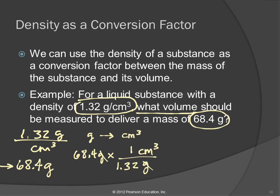You won't have to memorize densities. If you need a density, there will either be a table provided on an exam, or it will be given in the problem. In the homework, you might have to look it up. So: 68.4 divided by 1.32 equals 51.8181. How many significant figures? Three. So the answer rounds to 51.8 cubic centimeters.